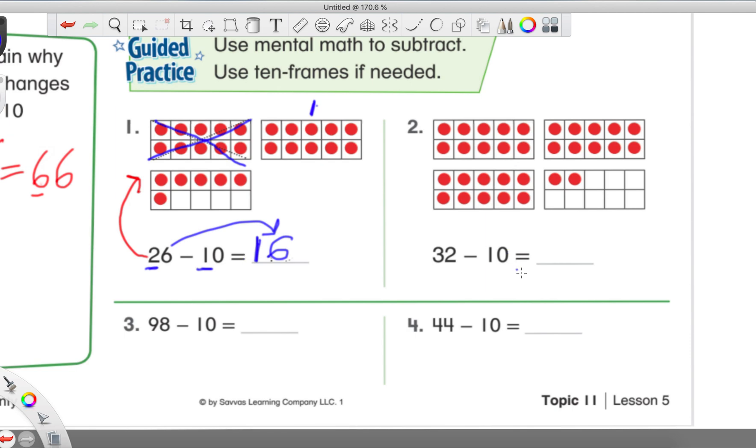And, if you notice, the only thing that they did was really change the tens place here. Two minus one is one. And, then, the six just gets brought on over. Because, we're just doing 10 less. We're not changing the ones place. So, go ahead and try number two on your own. All right. Try that one on your own really quick. Then, we'll go over it together.